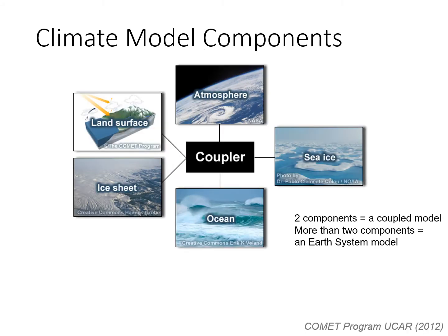To accurately model the Earth's climate system, the Earth's spheres need to be coupled in order to completely describe the climate system. We refer to climate models that couple more than two components as an Earth systems model.